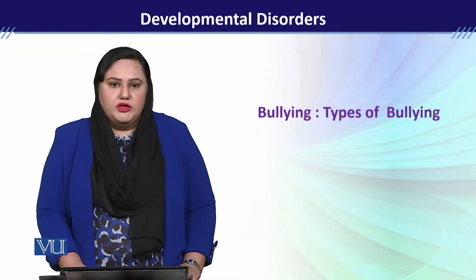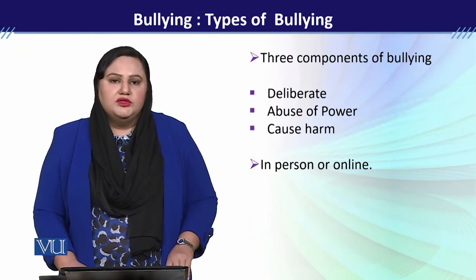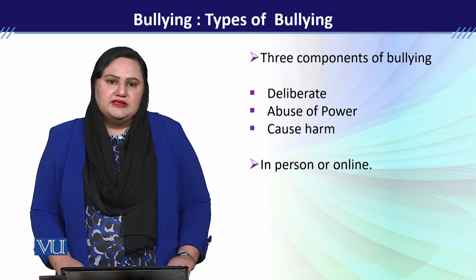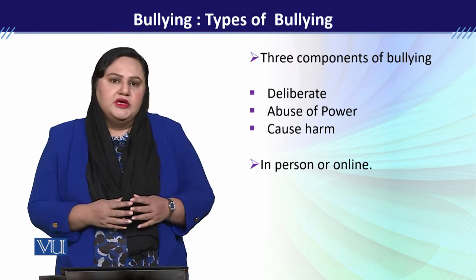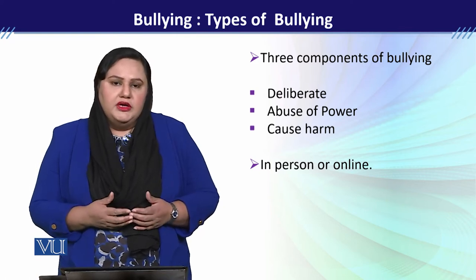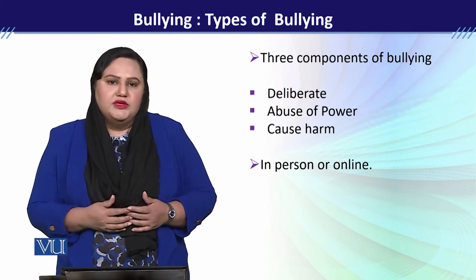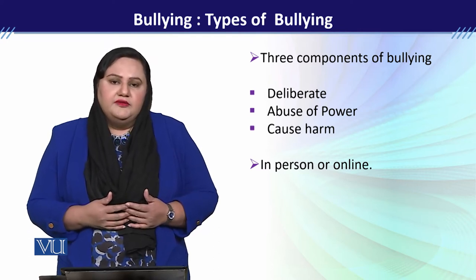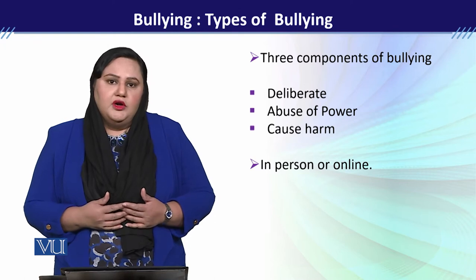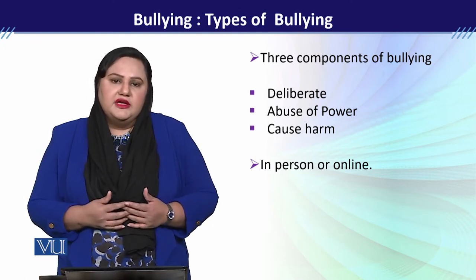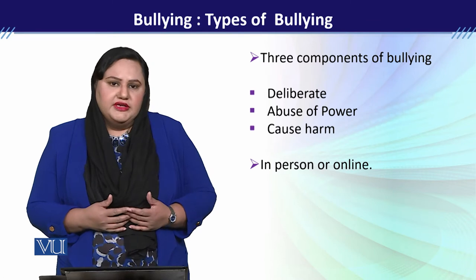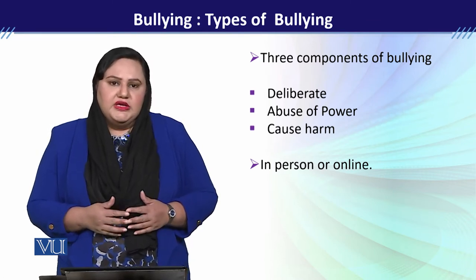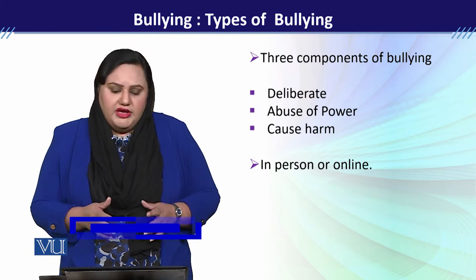Bullying and types of bullying. When we talk about bullying, we should keep in mind that bullying is an ongoing and deliberate misuse of power in a relationship through verbal, physical, and social behavior with intent to cause harm at the physical, psychological, or social level to another person. If we look into the definition, bullying has three main components.